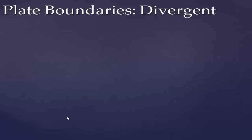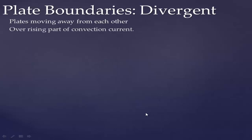The last half of this vodcast covers the different types of plate boundaries. At a divergent plate boundary, the plates are being pulled apart — moving away from each other — and this occurs over a rising part of the convection cycle.